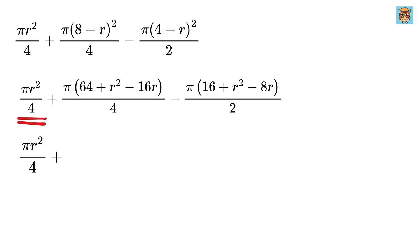So, again, write this as it is. Then this will be 64 over 4, or 16 pi. And then this will be pi r square over 4. Then this will be minus 4 pi r. Now, this will be minus 16 over 2, or 8 pi.